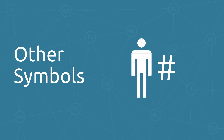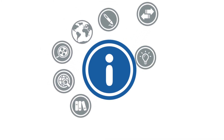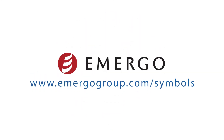There is only one symbol that falls into the Other category: the patient number. The patient number is an identification unique to a specific patient, used on custom-made devices such as form-fitting orthodontic products. We hope this presentation has given you a basic understanding of medical device label symbols. For more articles and resources on labeling, distribution, and more, visit www.emergogroup.com/symbols.